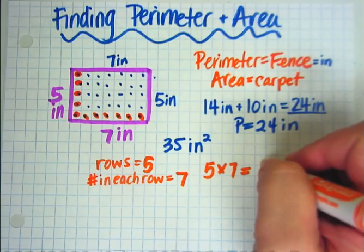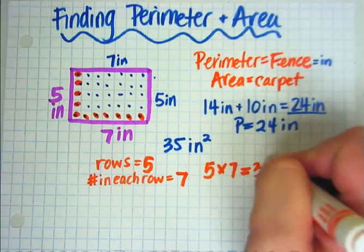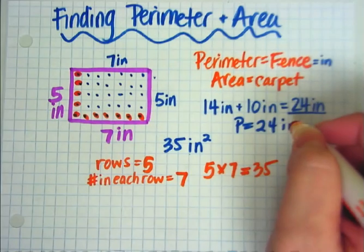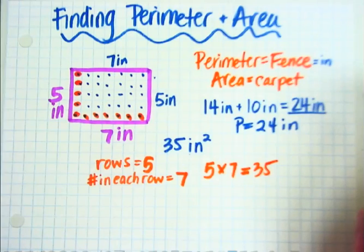Now, some of you are really good at multiplication, and you know right away that 5 times 7 is 35. If you don't know, 5's are easy to skip count. So you could think in your head, 5, 10, 15, 20, 25, 30, 35. That's 7 5's.